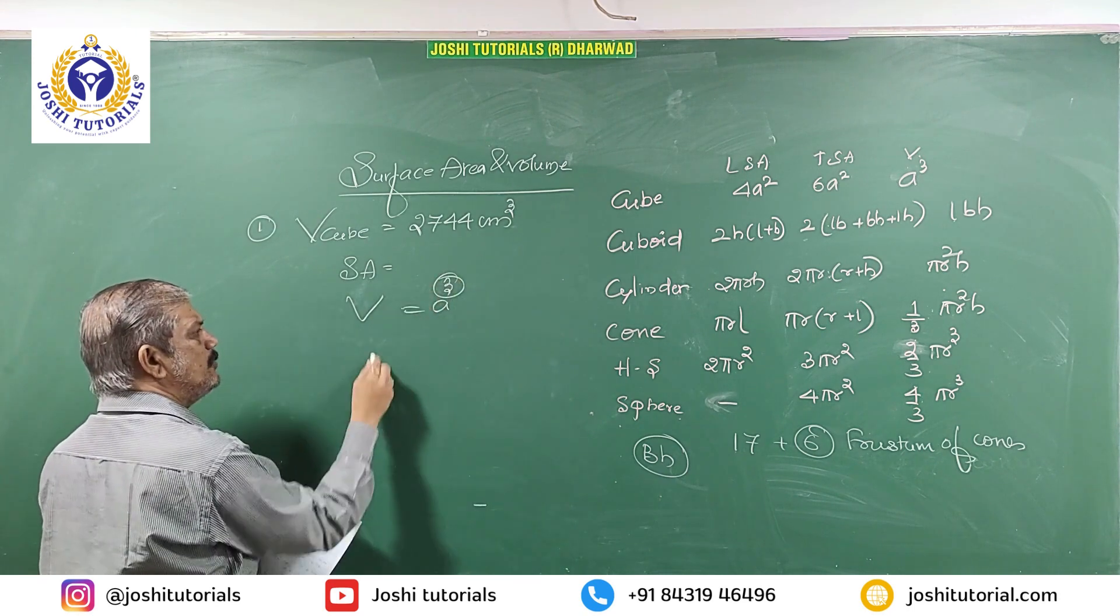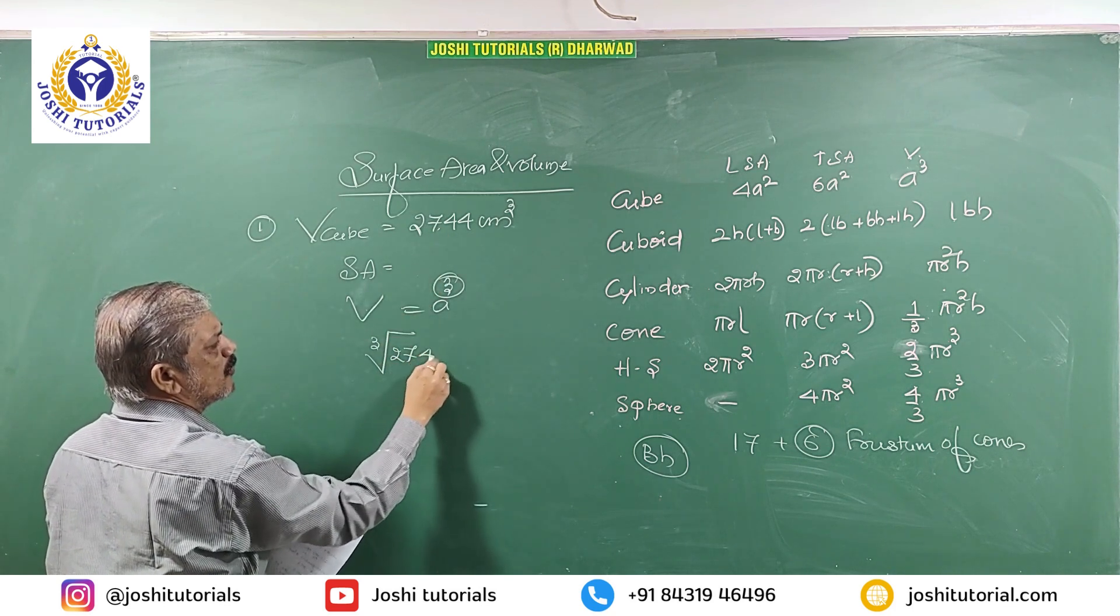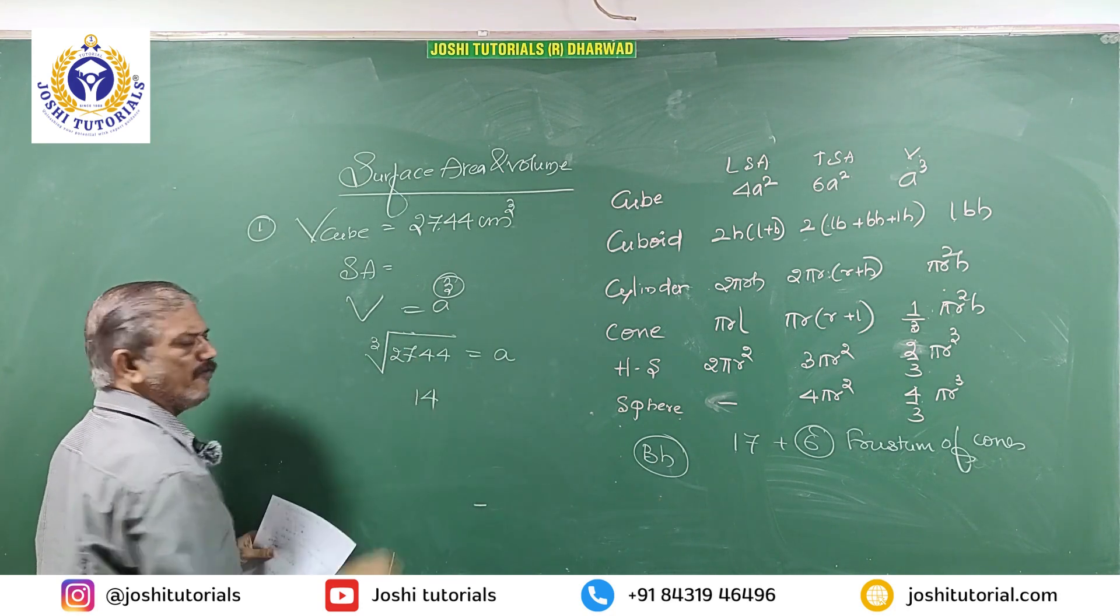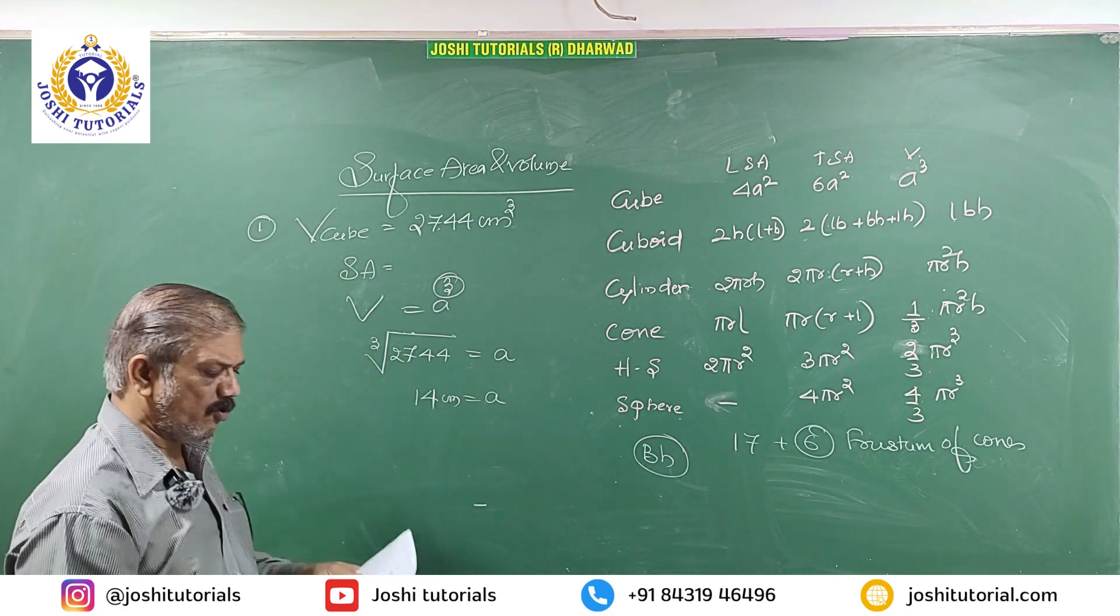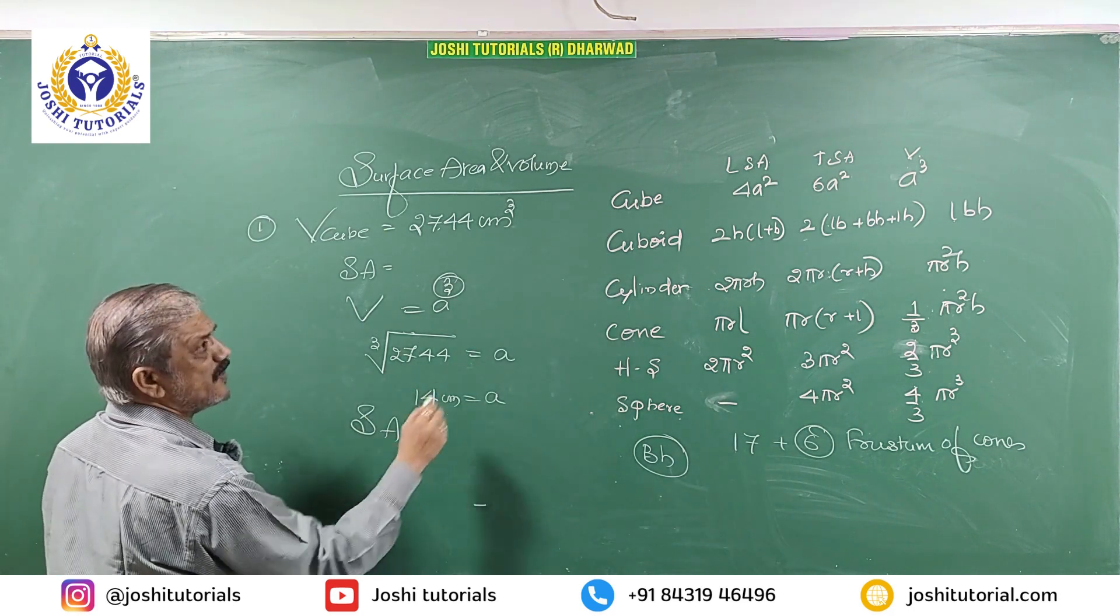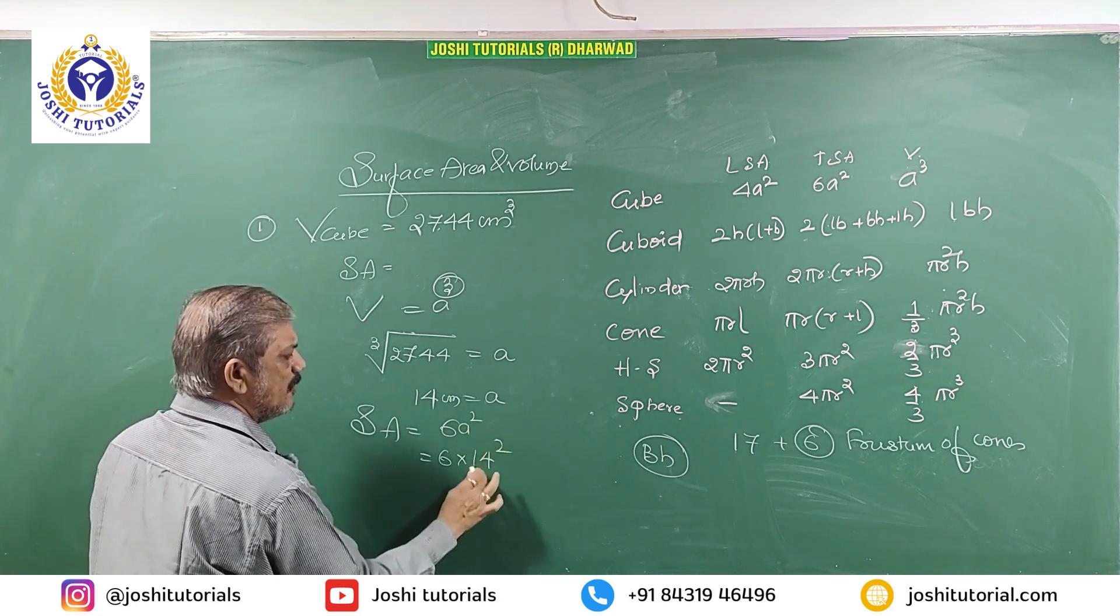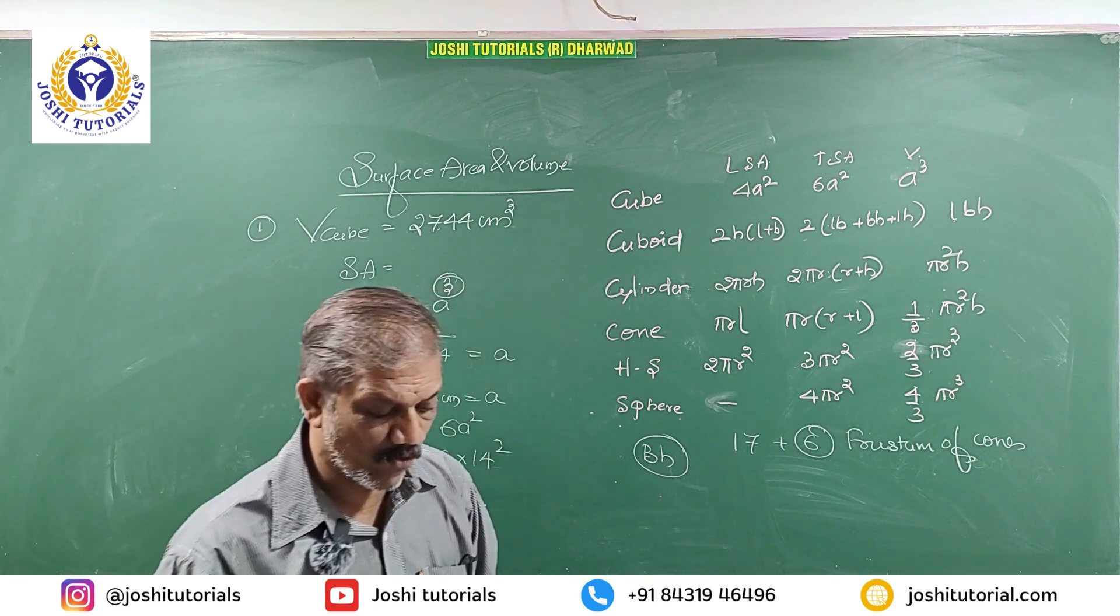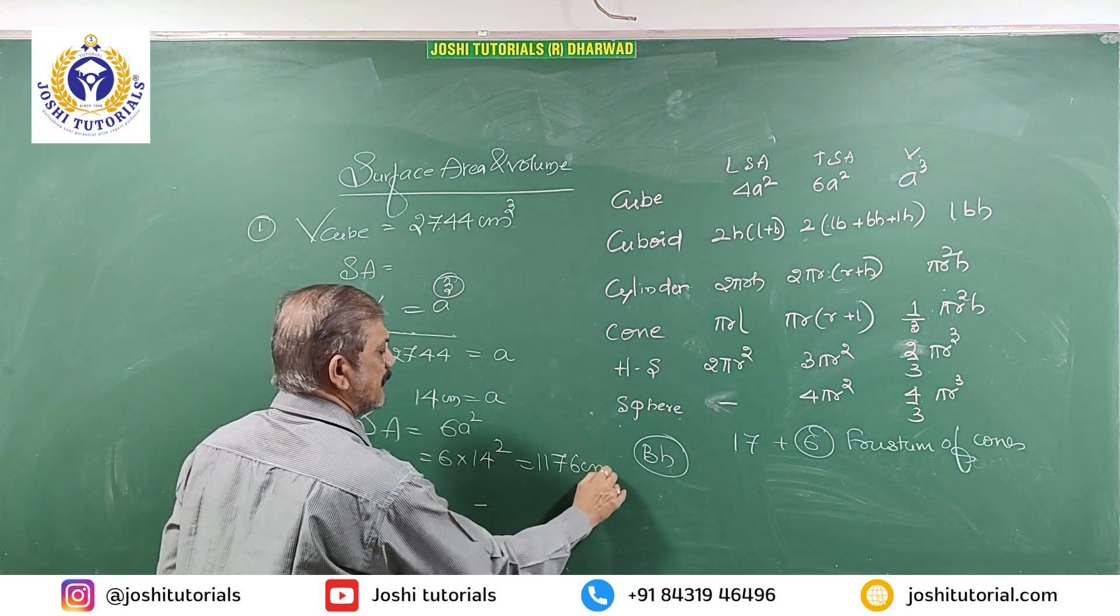When you remove the cube, you will write cube root of volume 2744. Complete the root, you write A. It is a perfect cube of 14. Therefore A is 14 centimeter. You have got, you want what you call surface area. Surface area is 6A square. That is 6 into 14 square. 14 square is 196. 196 into 6 is 1176 centimeter square.